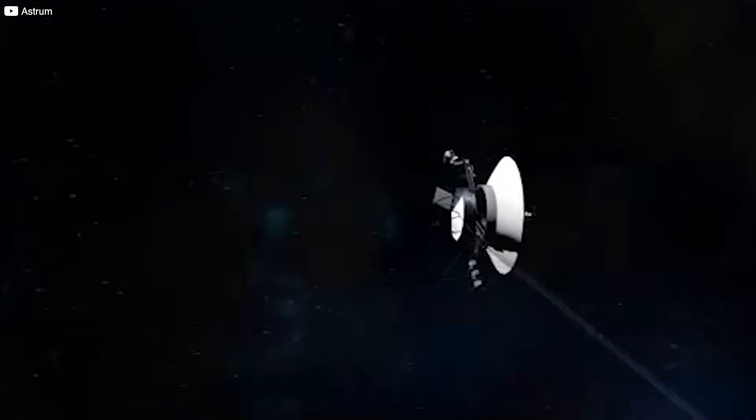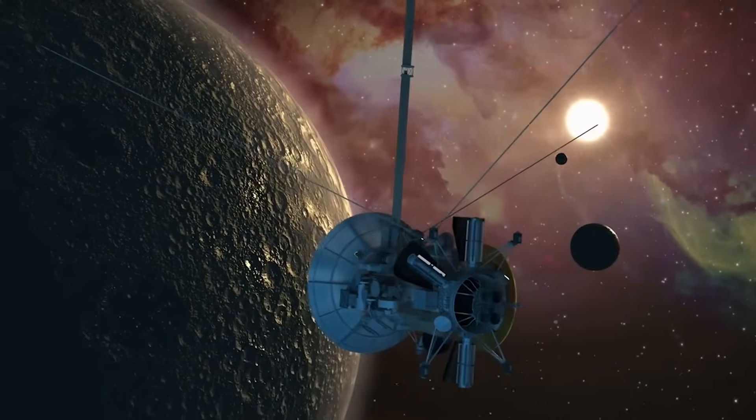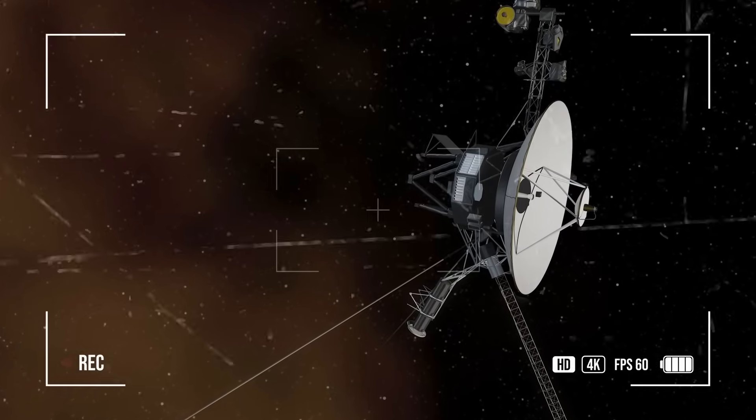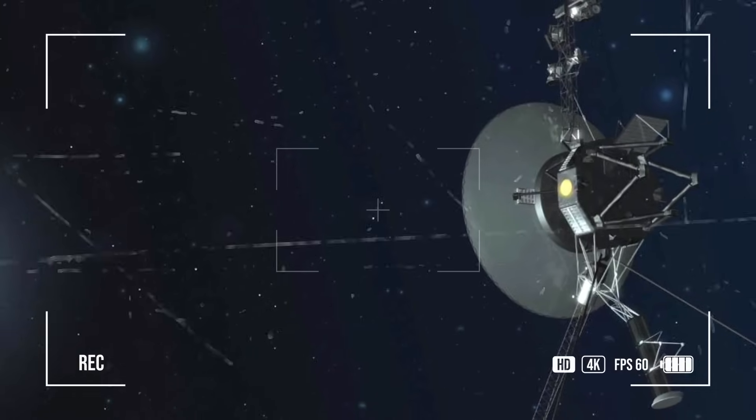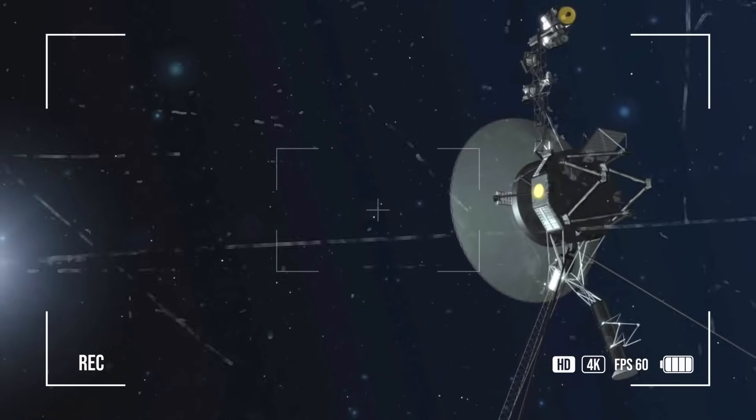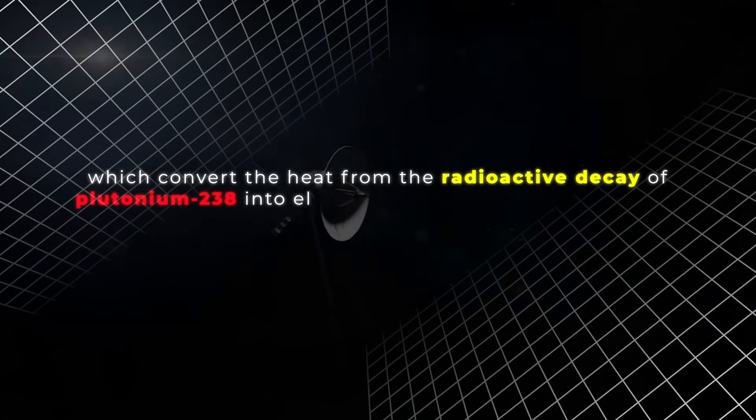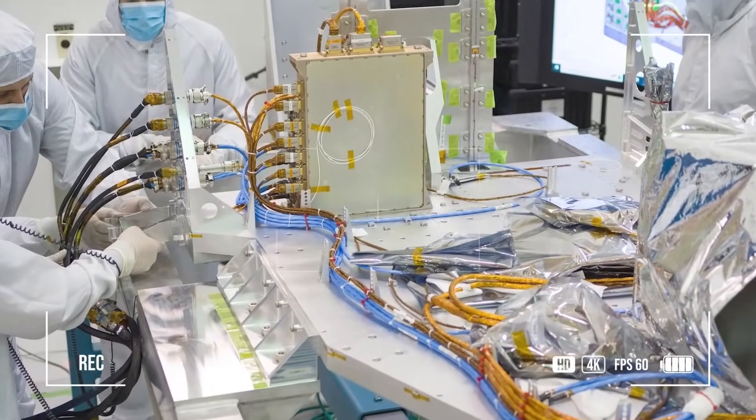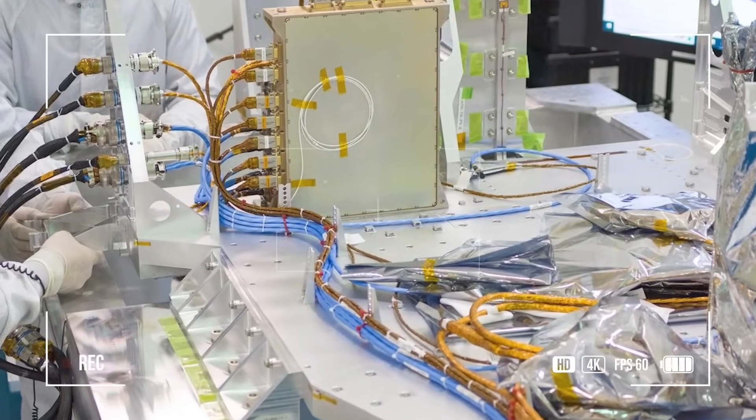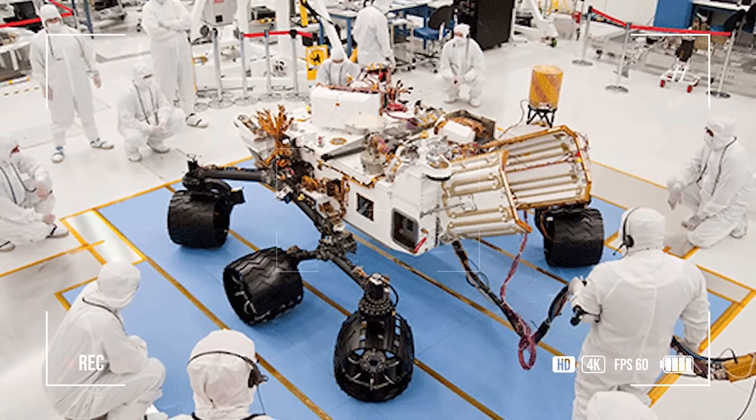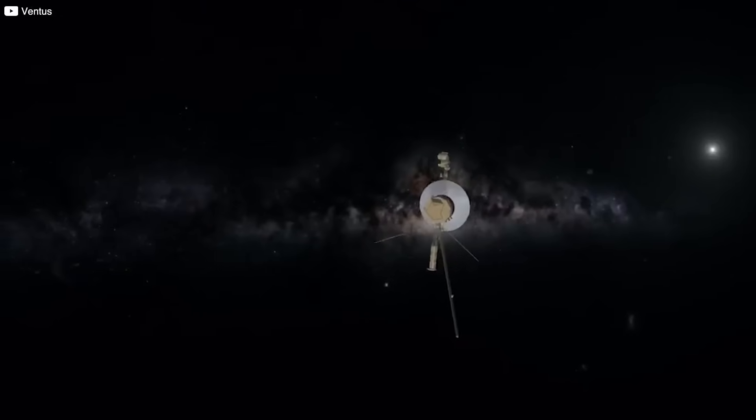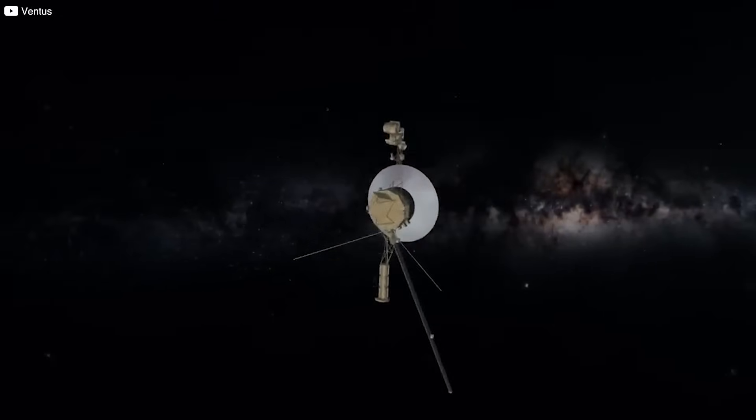While the discoveries made by the Voyagers continue to be profound, we must confront a difficult reality: the probes won't last forever. Their power is supplied by radioisotope thermoelectric generators, RTGs, which convert the heat from the radioactive decay of plutonium-238 into electricity. As the plutonium decays, the power output decreases by about 4 watts per year. NASA's Jet Propulsion Laboratory engineers have performed miracles to keep the probes operational for so long. Over the years, they've implemented power-saving strategies, shutting down non-essential heaters and instruments. Critical decisions have to be made regarding which instruments receive priority as power dwindles.